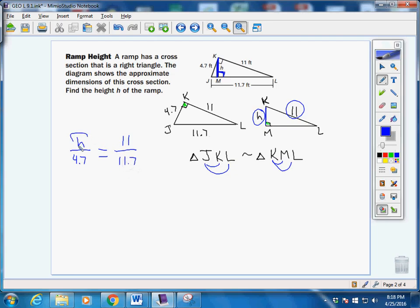Once you have that set, remember, we have three different methods of solving. I'm just going to use cross products. 11.7 times H has to equal 4.7 times 11. Divide both sides by 11.7, and we get our height of our ramp is approximately equal to 4.4 feet, which seems to be pretty reasonable.